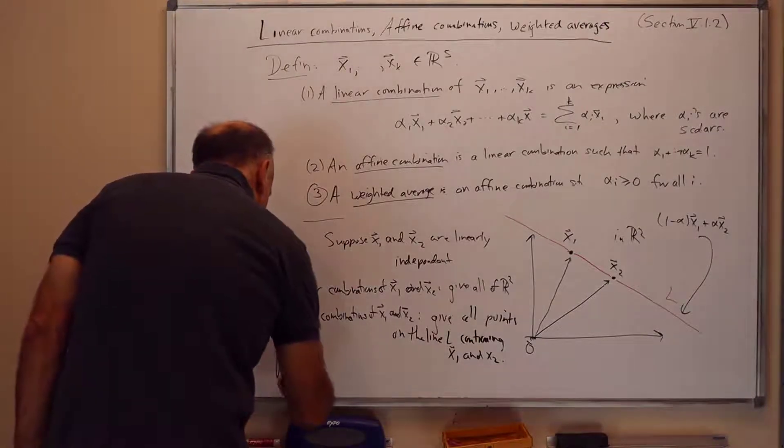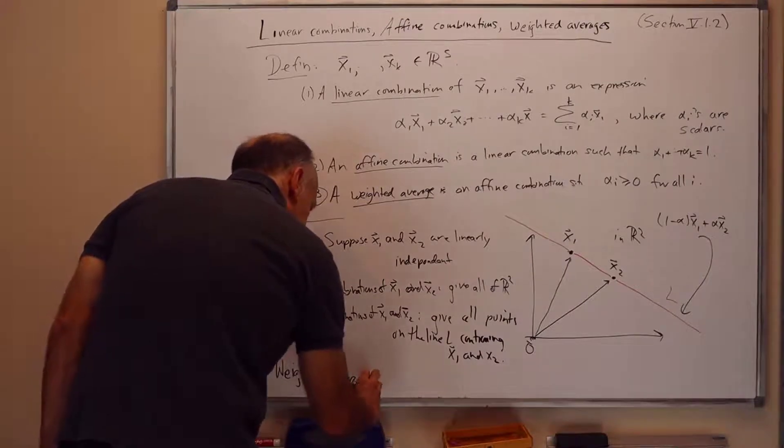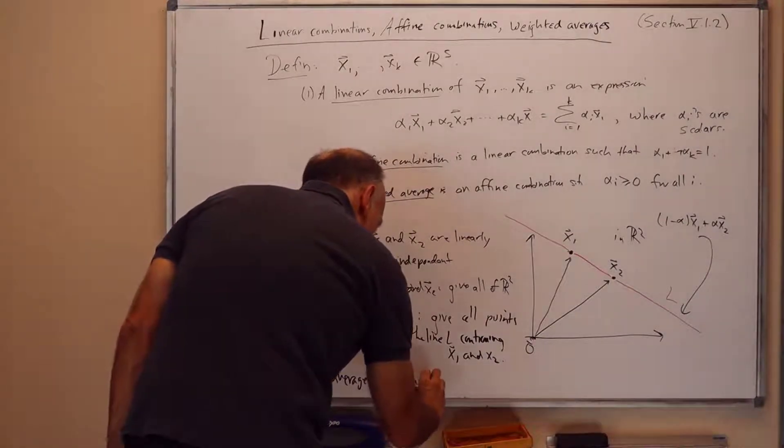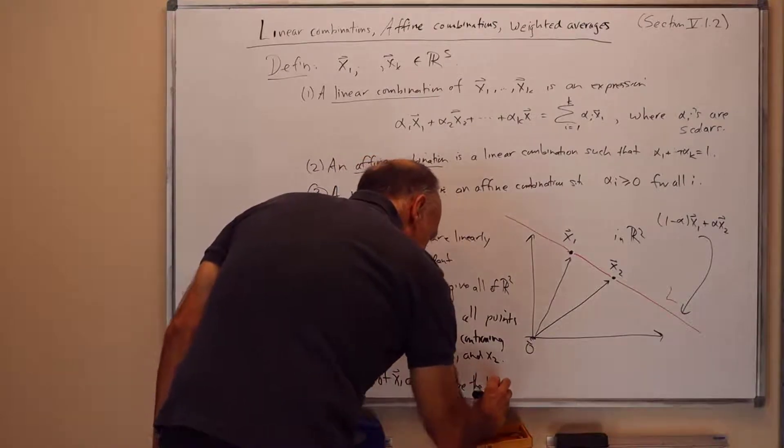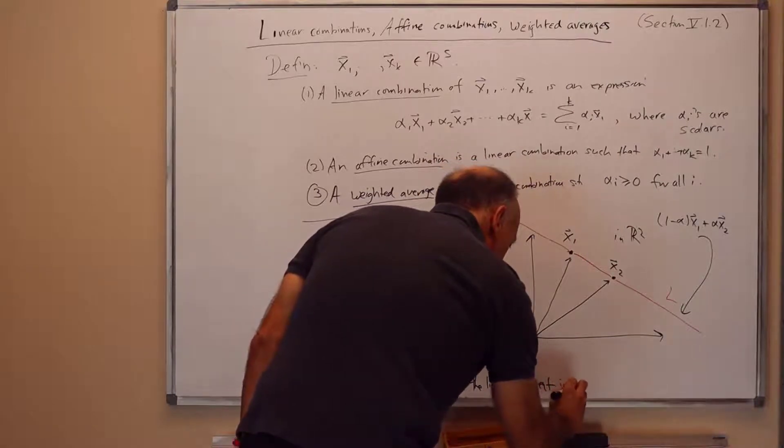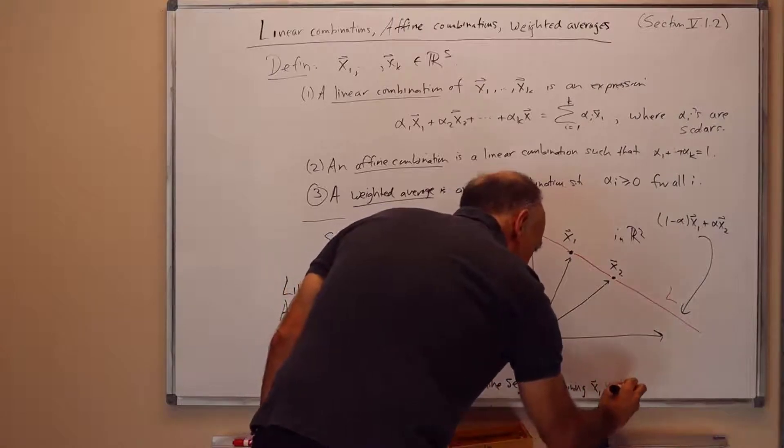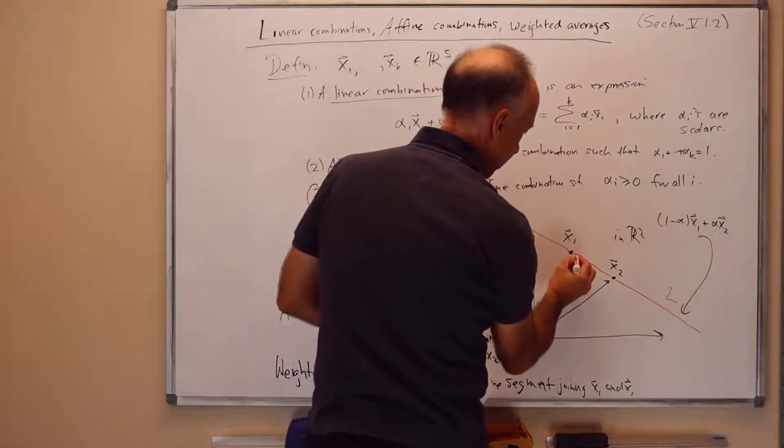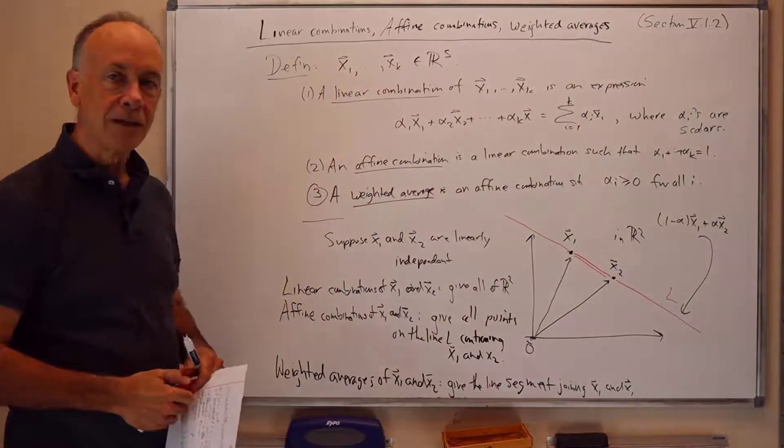Weighted averages give the line segment x1 and x2. These give the line segment joining x1 and x2. So this line segment is sitting in the picture right here. And so this is where the weighted averages sit, is between x1 and x2.